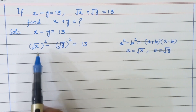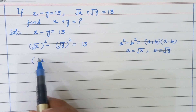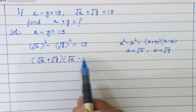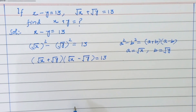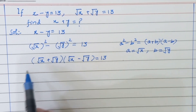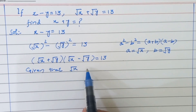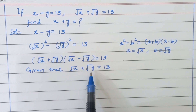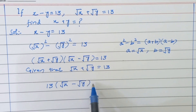So, using this formula, we can write it as root x plus root y times root x minus root y is equal to 13. But we are given that root x plus root y is equal to 13. So, substituting this value of root x plus root y equals 13 here in this equation, it becomes 13 times root x minus root y equals 13.